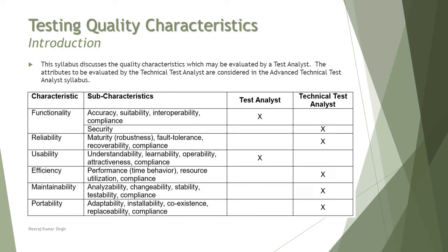There are many usability parameters such as understandability, learnability, operability, attractiveness, and compliance — and compliance falls under everything. When it comes to functionality, security is one parameter, but it is not a responsibility of the test analyst, as you can see.